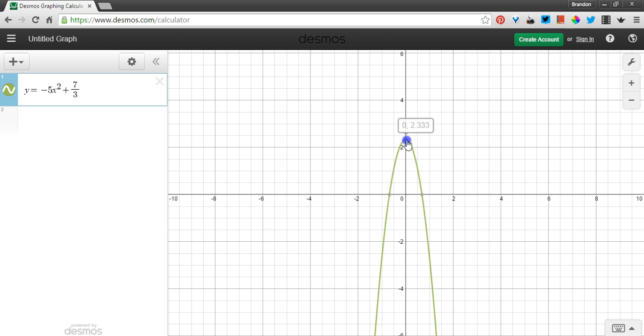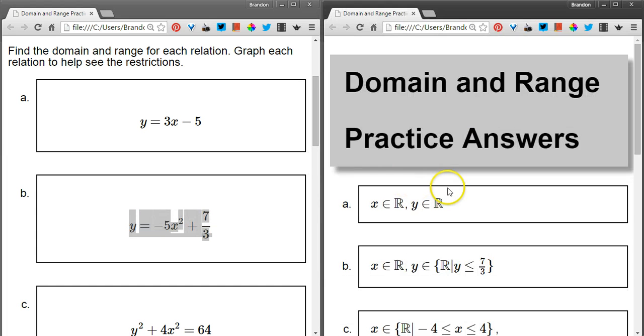But y, y can't get above this. That's the maximum value for y, that's the top of the hill. You can't, for example, put in some x value and get y equal to 6. That's not possible. The highest value you can get is this value, which is 7 thirds if we write it as a fraction. And we read that right here out of the equation. So that means that y is any real number that's less than or equal to that value 7 thirds.